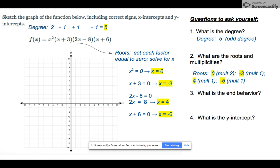So let's graph those roots. Let's put a point at x equals 0. That will be a double root. x equals negative 3, x equals 4, and x equals negative 6. These are important points on the graph.